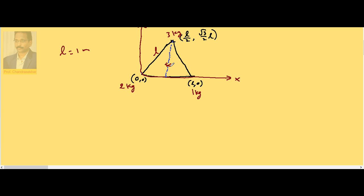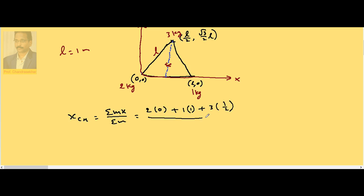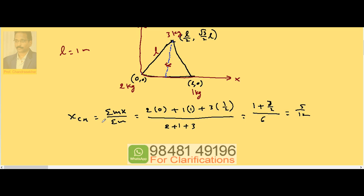The x-coordinate of the center of mass is x_cm = Σmx / Σm. This gives: (2×0 + 1×1 + 3×(1/2)) / (2 + 1 + 3) = (0 + 1 + 3/2) / 6 = (5/2) / 6 = 5/12. So x_cm = 5/12 meter.